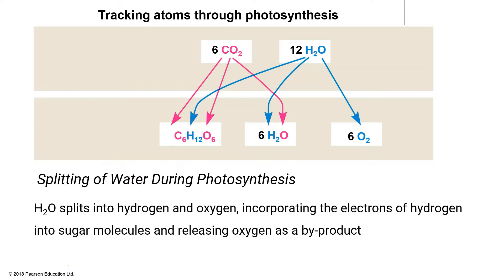Looking at this slide, we can see that carbon dioxide and water — which consist of carbon, oxygen, and hydrogen — are shuffled and end up as glucose, water, and oxygen. During the movement of these atoms, what occurs in photosynthesis is the splitting of water, where water is split into hydrogen and oxygen, incorporating the electrons of hydrogen into sugar molecules and releasing oxygen as a byproduct.